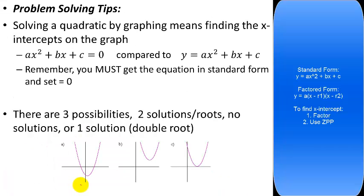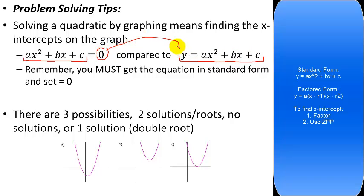Problem-solving tips: solving a quadratic by graphing means finding the x-intercepts of the graph. If you have a quadratic set equal to zero, think of it as y equals ax² plus bx plus c with y plugged in as zero. Solving for x gives you the x-intercepts, because the y-value is zero on the x-axis. The equation must be in standard form and set equal to zero before you can find the factors and zeros.